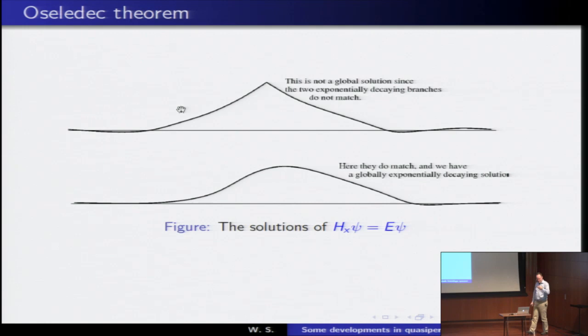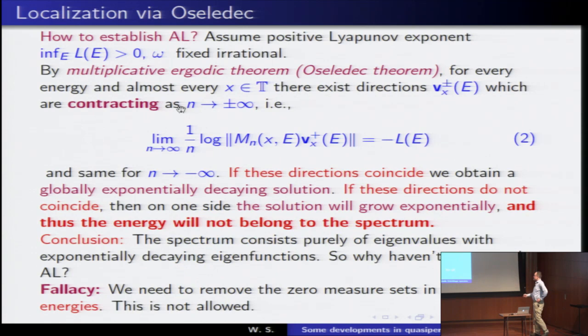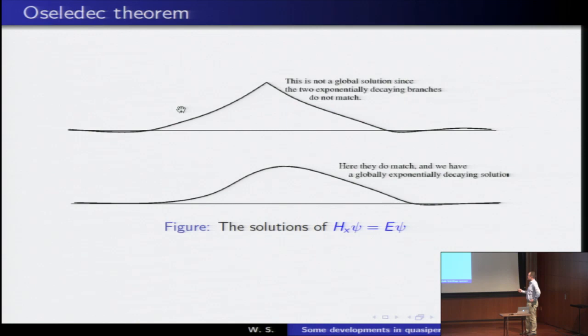So why is it not as easy as that? Well, the fallacy in this is written here that in Oseledec theorem you have to remove a set of measure zero, but that set of measure zero depends on your E's. If you're doing this for a continuum of E's, you will remove possibly all of the phases, the entire space of x - that's not allowed. So localization is not as simple as that. It's not as simple as this picture.